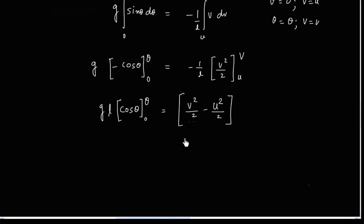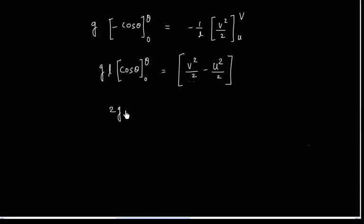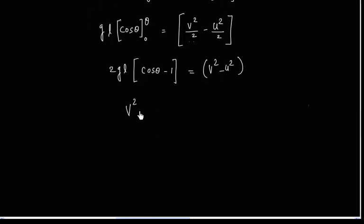So we will have v square by 2 minus u square by 2. Upper limit minus lower limit. So v square is u square plus 2gl times cos theta minus 1.